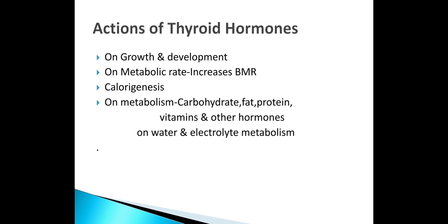Thyroid hormones have action on growth and development, metabolic rate by increasing the basal metabolic rate, and it is calorogenic. All the metabolisms — carbohydrates, fat, protein, vitamins, other hormones, and water — are affected. The mechanism of action is through cyclic AMP as the second messenger when the hormones bind to the nuclear receptor.